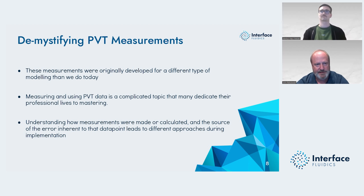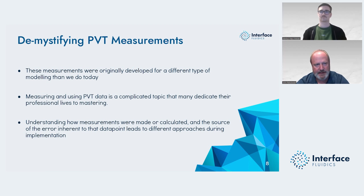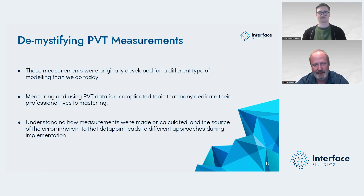These measurements were originally developed for a different type of modeling than we do today. Back when they were made — and I've seen reports back as far as the early 1930s — there was not the computing capability we have today. Most of this was done by hand, and the models were very simple, and the data were originally designed for use in those models. A lot of the data in PVT reports is calculated or altered, and it is important to understand which data may be calculated or altered because it impacts the way you do your modeling.